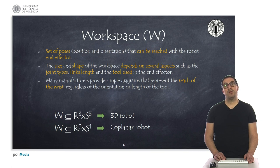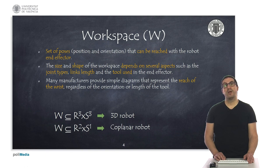In the case of a robot moving in 3D space, the workspace is always a subspace of R3 × S3, while in the case of a coplanar robot, the workspace is simply a subspace of R2 × S1.